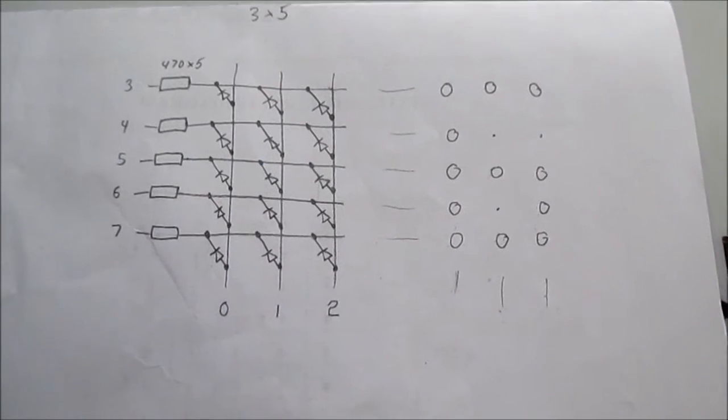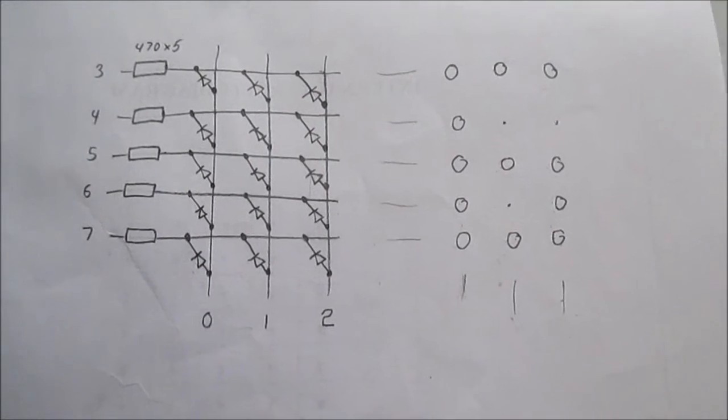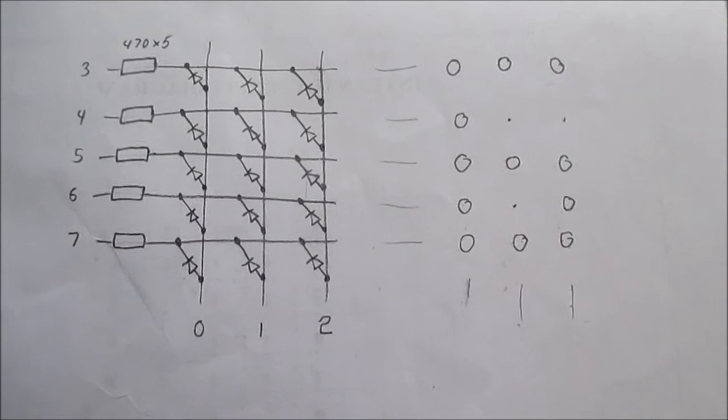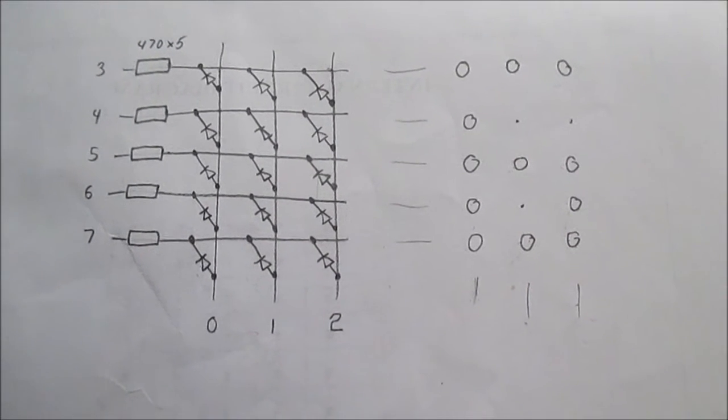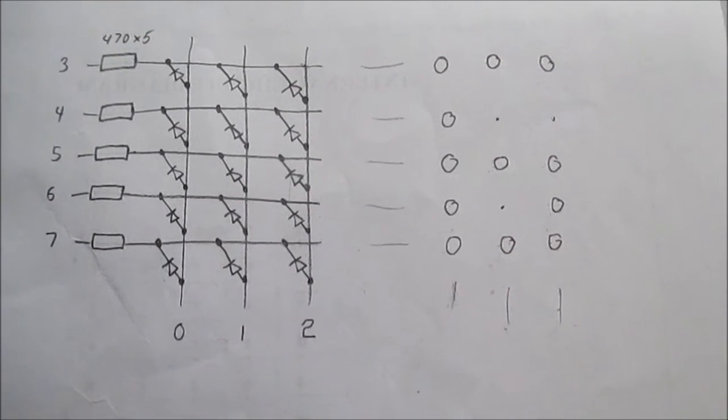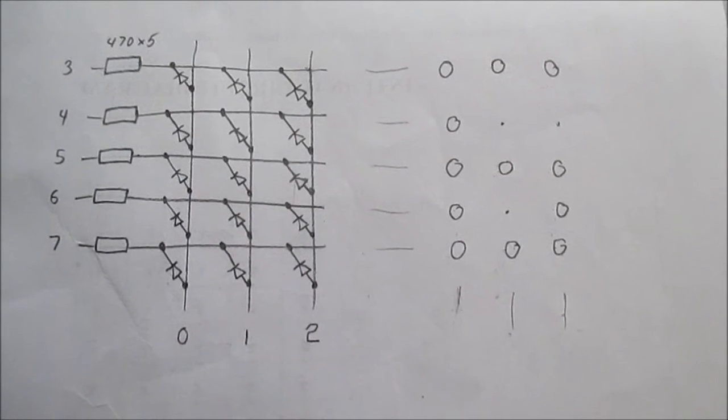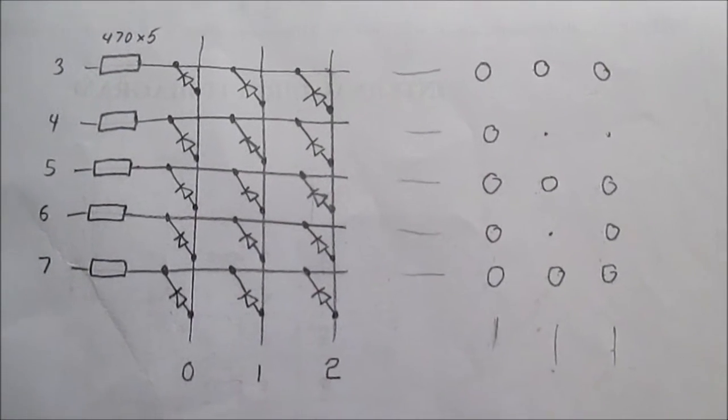So if I had eight output lines, eight times eight is 64, that's eight squared, minus eight leaves me with 56. So that's how you figure that.